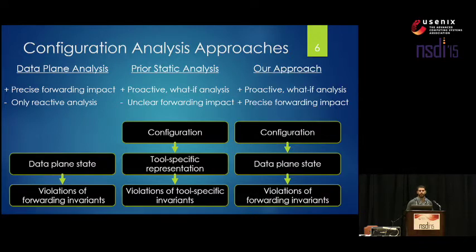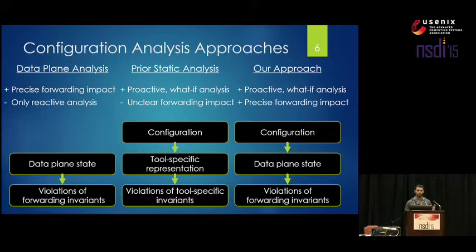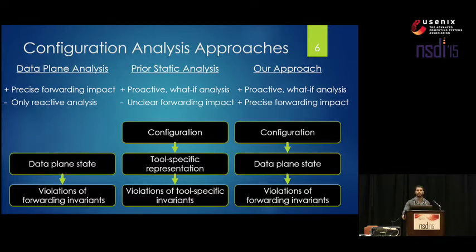Our approach combines the benefits of these two prior threads of research by starting from the configurations and using them to actually compute what we believe the data plane would be if those configurations were on routers live in a network. Now that we have the data plane, we can use all of the data plane analysis tools from the prior thread. The major contribution here is this link from configuration to data plane state, which wasn't done before. The link from data plane state to violations of forwarding invariants is already implemented in data plane analysis tools, though we did make some slight contributions there.